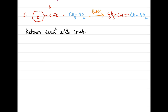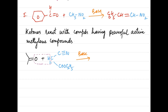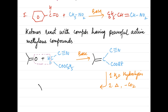Ketones, being less reactive than aldehydes, must be condensed with powerful active methylene compounds. The rest of the mechanism is similar to that with aldehydes. For example, acetone reacts with an active methylene compound flanked by a strong electron withdrawing nitrile group on one side to form an alpha-beta unsaturated compound, which upon hydrolysis and heating loses a carbon dioxide molecule to form an alpha-beta unsaturated acid as product.